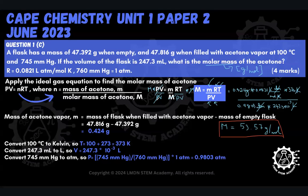The key here was to apply the ideal gas equation and recognize the substitution that little m over big M equals the number of moles, then transpose making M the subject. As long as your unit conversions were done correctly, you would get this answer. With that, we've come to the end of this question on kinetic theory from the June 2023 Paper 2 for Unit 1. Give this video a like, drop a comment below, subscribe to the channel, and hit the notification bell so you'll be first to know when we upload new content. See you in our next video.